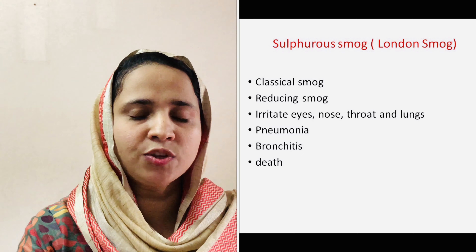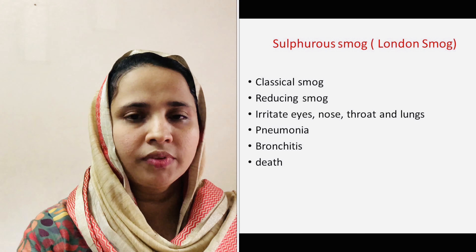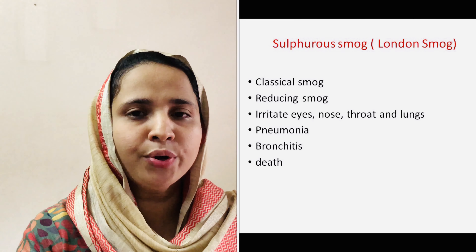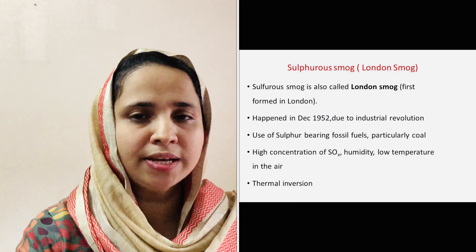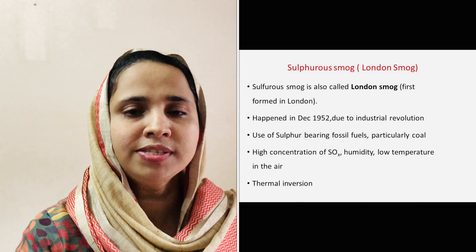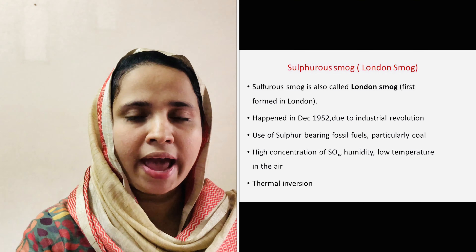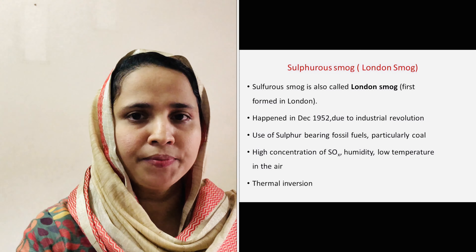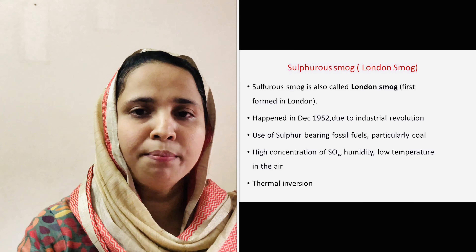Do you know what are the adverse effects of classical smog? Sulphurous smog irritates eyes, throats and lungs, leading to pneumonia, bronchitis and several respiratory diseases, which often lead to pulmonary and cardiovascular diseases. It can also cause lung cancer. Poor visibility conditions due to sulphurous smog create several motor vehicle accidents. In December 1952, London experienced a 5-day sulphurous smog that caused the death of around 4000 people and made thousands ill. Sulphurous smog is also experienced by several cities, for example Calcutta and Beijing.